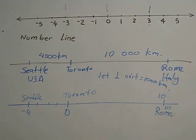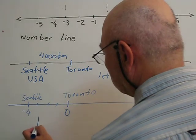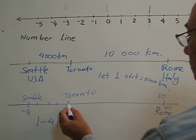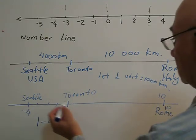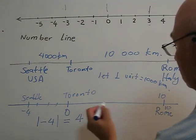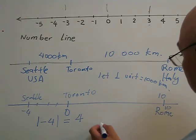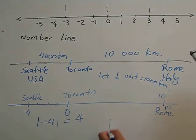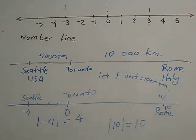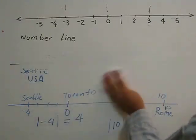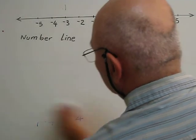As I mentioned, distance is not a vector quantity. Seattle is at negative 4. So what is the absolute value — what is the distance between Toronto and Seattle? Four units, which is 4000 km. We don't say negative 4000 km; that doesn't make sense. From Toronto to Rome is 10 units, and the absolute value of 10 is 10. So absolute value can never be negative — it must be zero or positive, always a positive value.